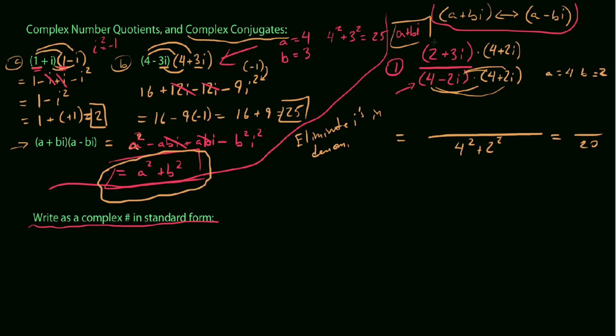So what about the top? Well, we're actually going to have to FOIL out the top. We get 8, looks like plus 4i plus 12i, so plus 4i plus 12i. So a grand total of 16i there. And then we say, so plus 3i times 2i is 6i squared, which is really just negative 6.